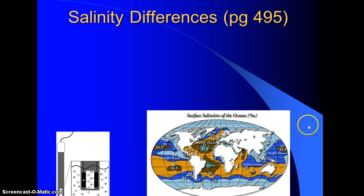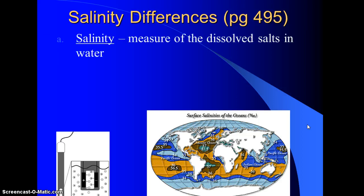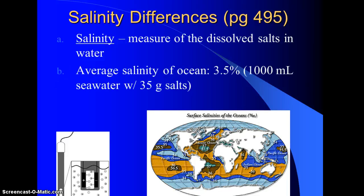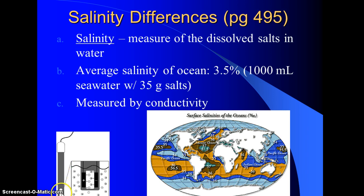Salinity differences are another cause for ocean currents. Salinity is a measure of the dissolved salts in water. The average salinity of the ocean is 3.5% — for every 1,000 milliliters of seawater, there's about 35 grams of dissolved salt. It is measured with a conductivity probe: a small electric current flows through the fluid, and how well it's received on the other side directly measures the amount of salts or ions in solution.